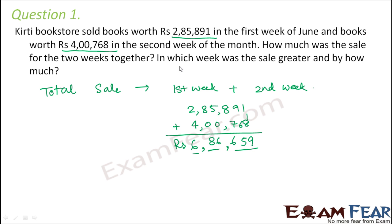Now the second part of the question says that in which week was the sale greater and by how much? Now looking at these two numbers, you have to decide which is a greater number. So this is 2 lakhs. This is 4 lakhs. So which one is greater? Of course, 4 lakhs.